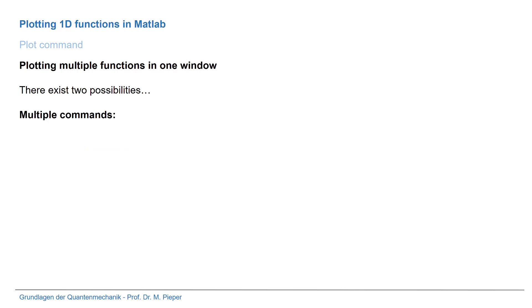The second possibility uses multiple commands. We start with the first plot: plot(X, sin(X)). If we then add the second function plot(X, cos(X)), the sine plot would be deleted. That's why we place 'hold on' after the first plot command, telling MATLAB to continue plotting in the same window without deleting old plots. MATLAB adds plots until we write 'hold off'.